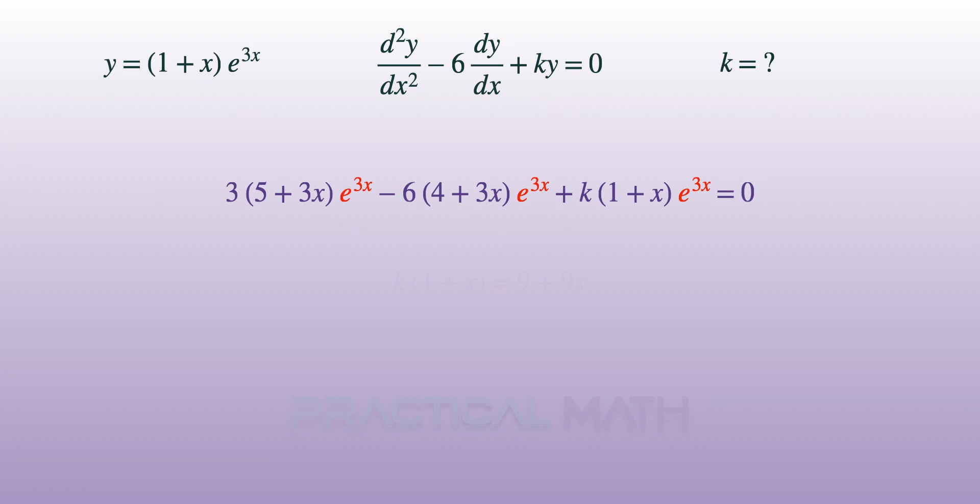Since you are solving for the constant k, we shall cancel away all the e to the power of 3x, giving us a simplified answer of k times 1 plus x on the left and 9 plus 9x on the right.